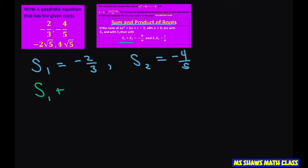So you add your first solution plus your second solution. So this is negative two-thirds minus four-fifths. Now our common denominator here is going to be 15. So let's do that.